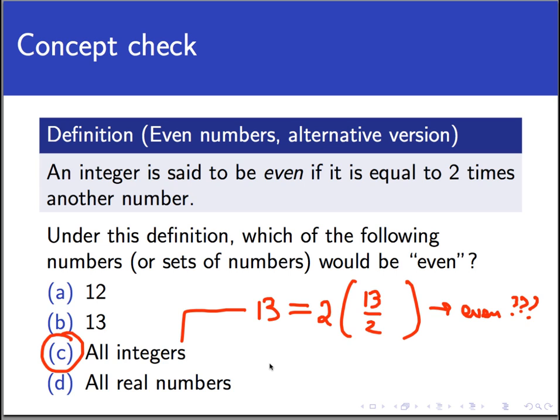In fact, we could play this game for any integer at all. If n is any integer whatsoever, then n is always 2 times n over 2. So all integers would be included as even. Not all real numbers would be included, because we do have this filter on the definition that only allows integers to be considered.